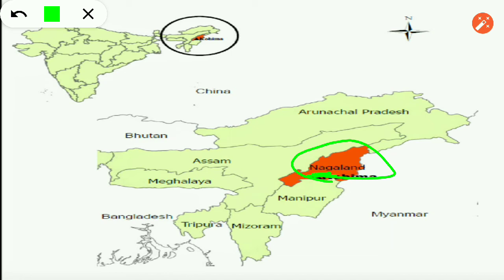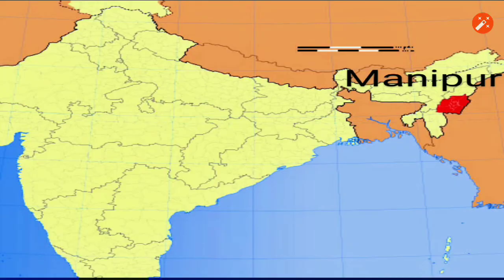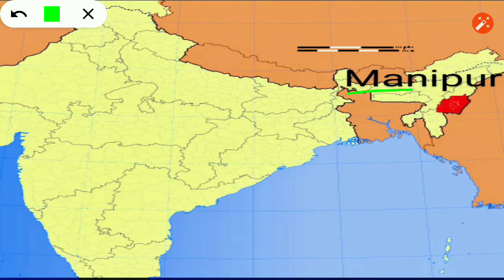What happens after the Naag? The Naag has something very precious — it shines, it is a kind of jewel. The Naag has a mani — a jewel. And this is why Nagaland's neighboring state is named Manipur. You know, Manipur is also called the jewel of India.